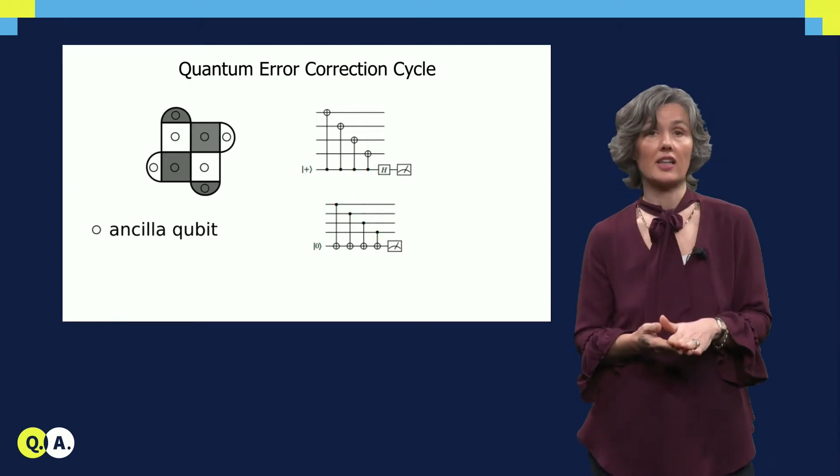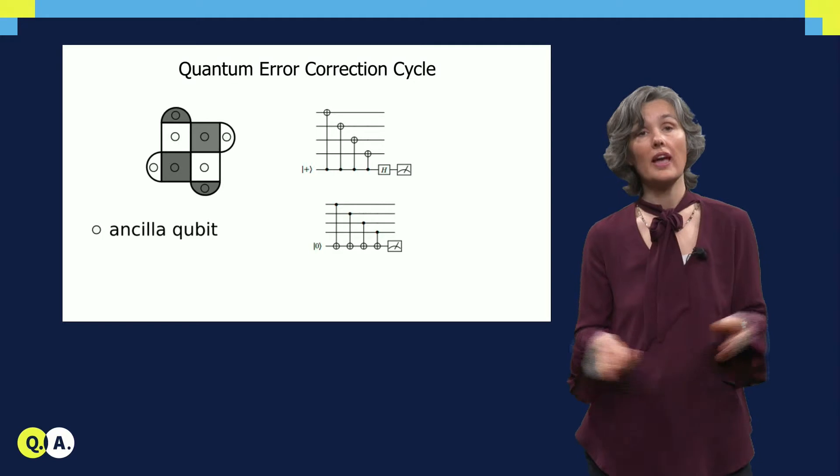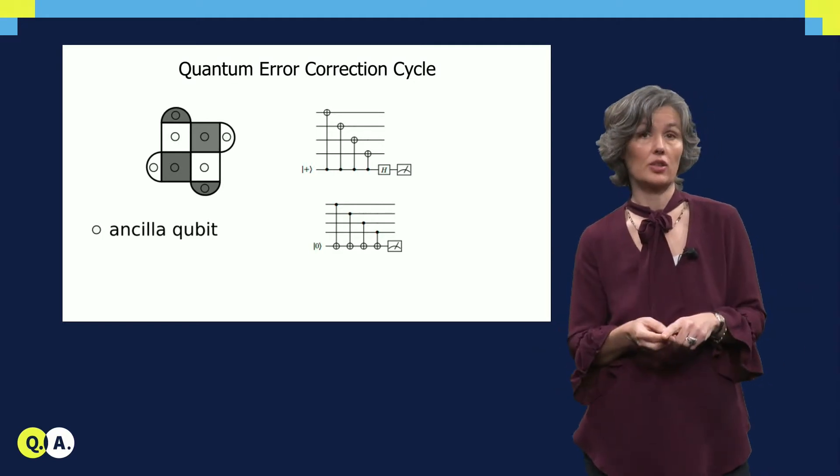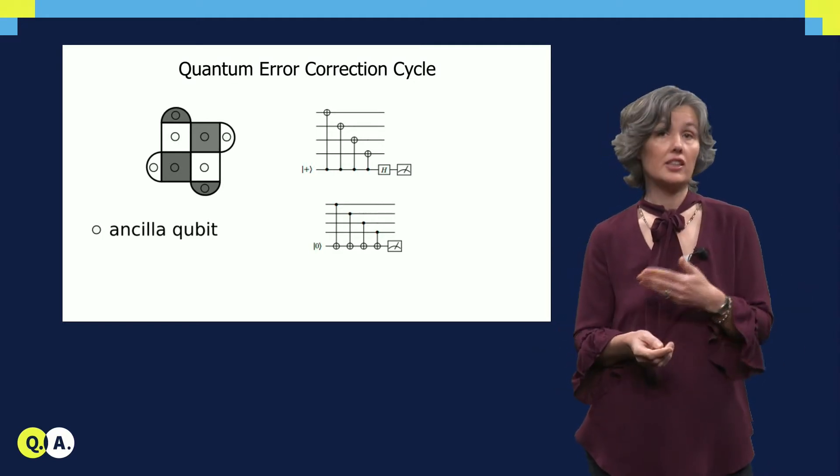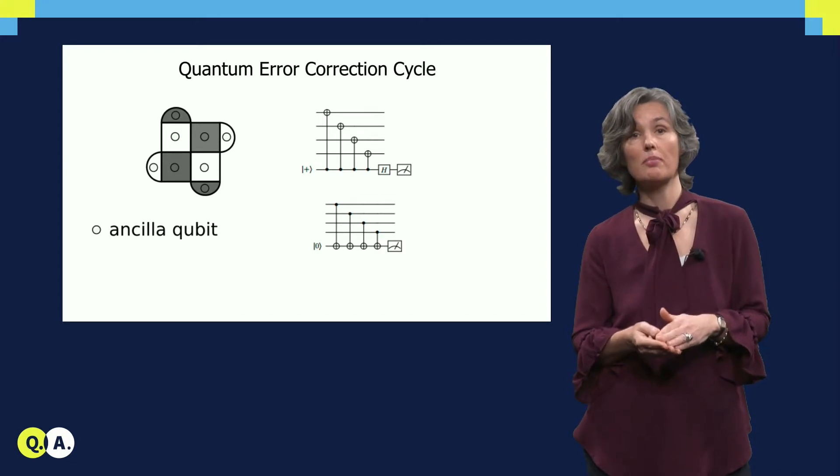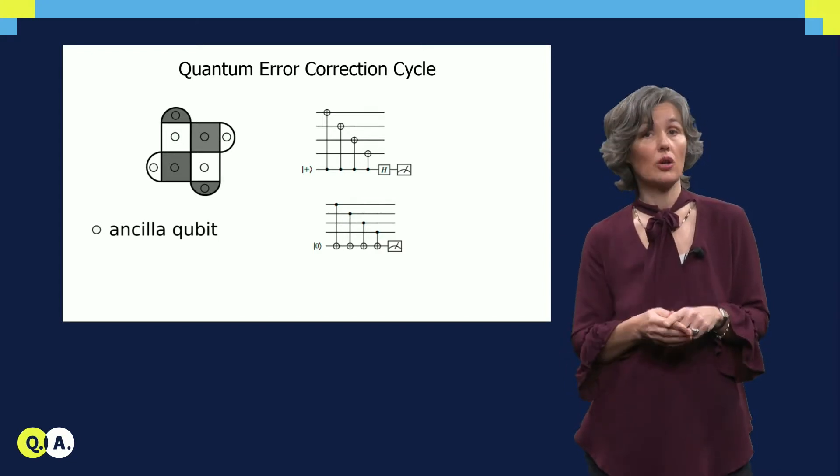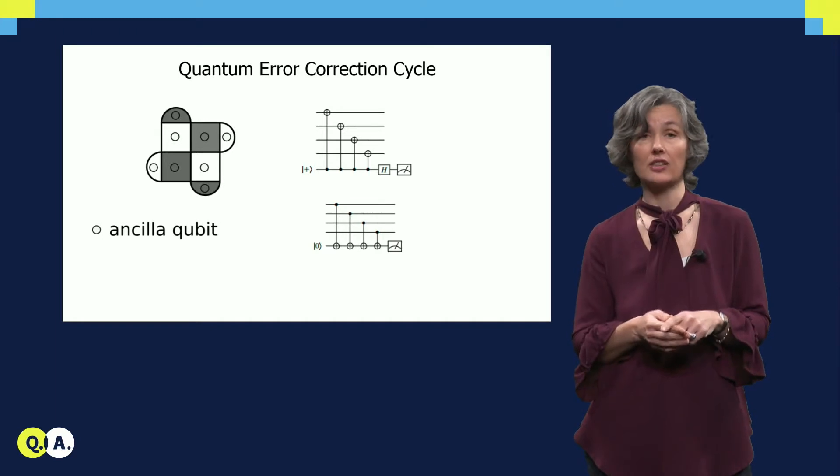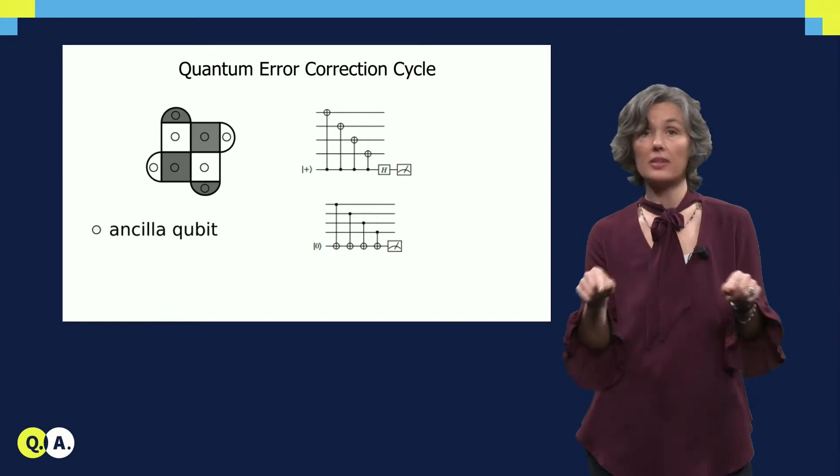Now, to execute the parity check circuits for the surface code, we add ancilla qubits to the data qubits, as you see in the slide. The ancilla qubits can be placed in the middle of the plaquettes, so that they interact via CNOTs, via controlled knots, with the neighboring data qubits.